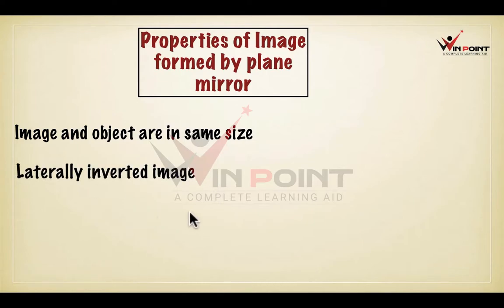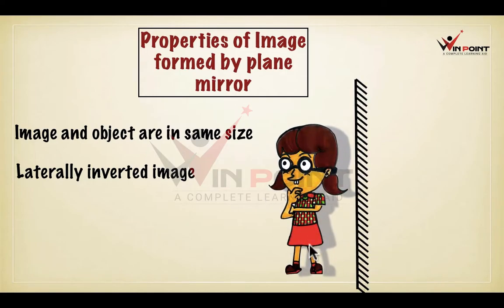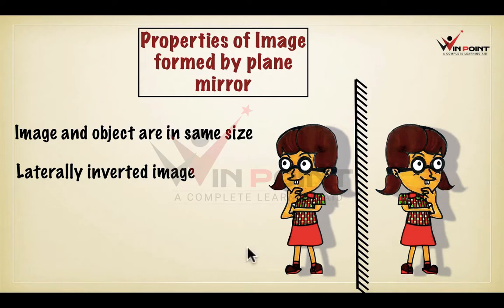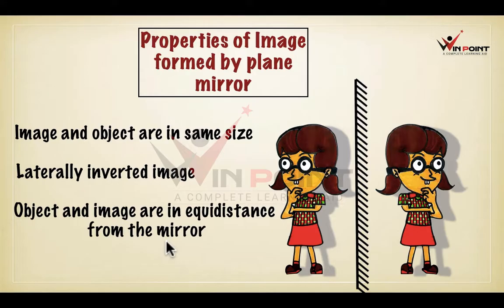This is known as lateral inversion — lateral inversion means right becomes left. When we raise our right hand, the image raises its left hand. The image and object are the same size and the image is laterally inverted. Also, the distance between the object and the mirror is equal to the distance between the image and the mirror — object and image are at equal distances from the mirror.